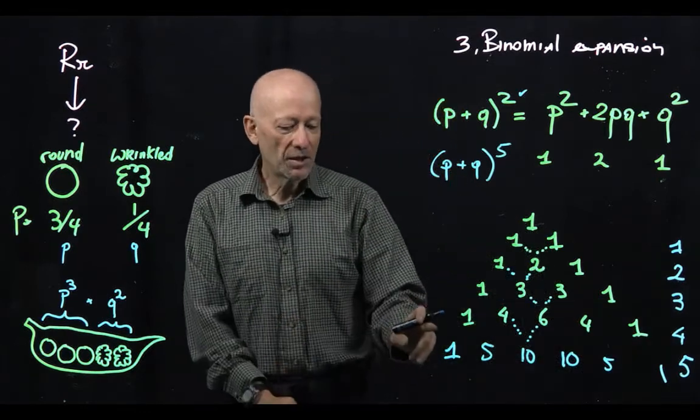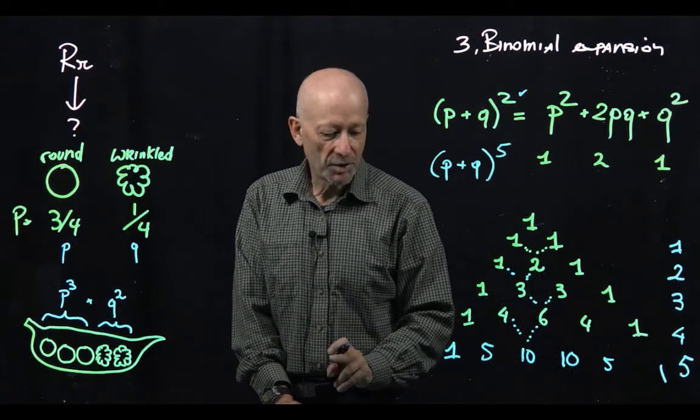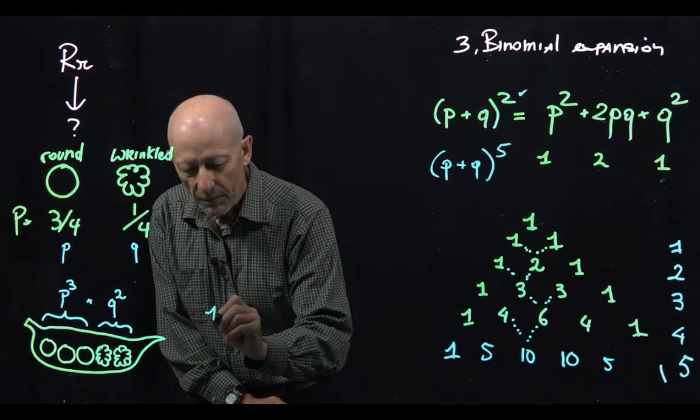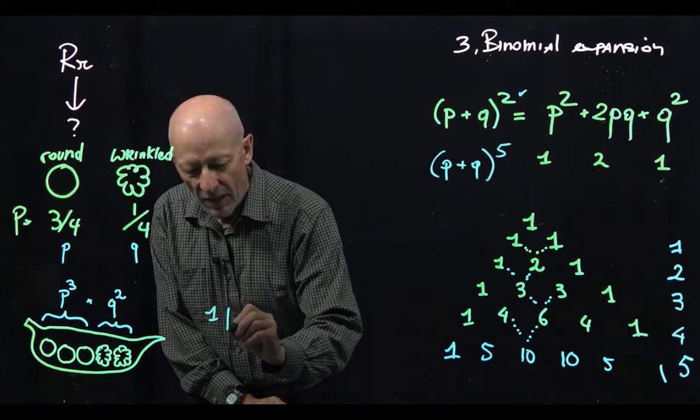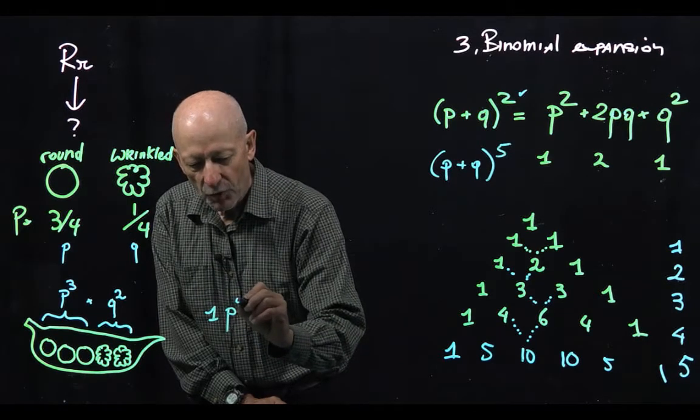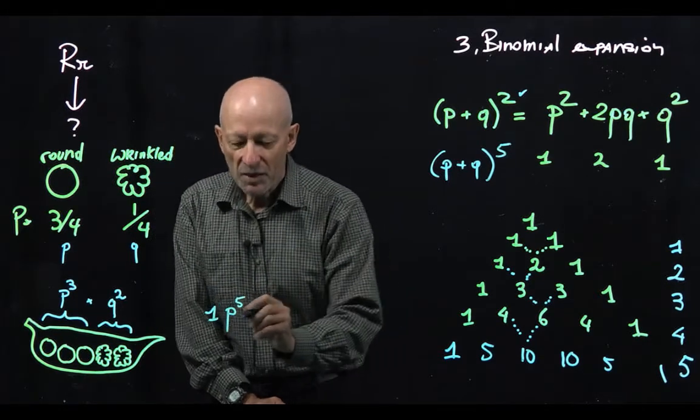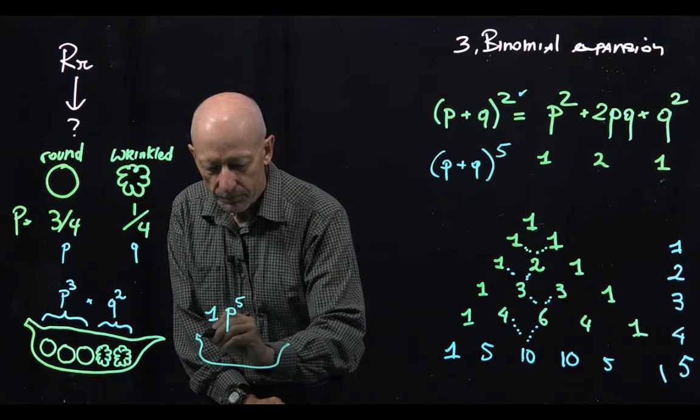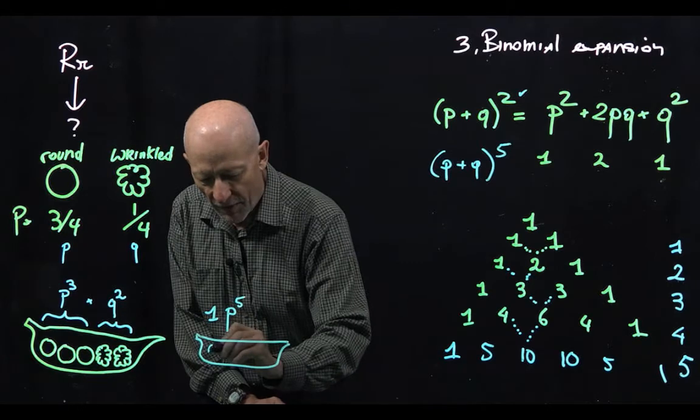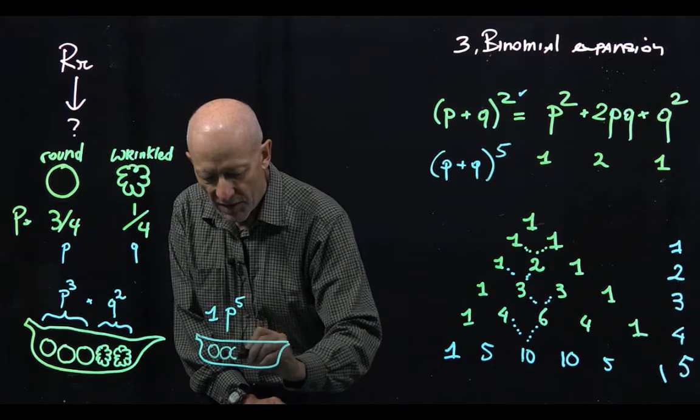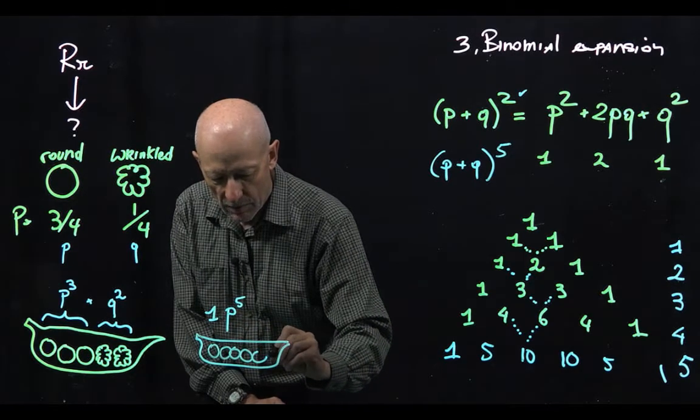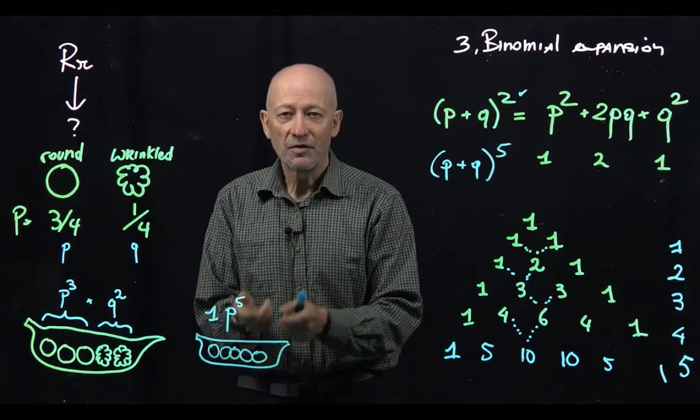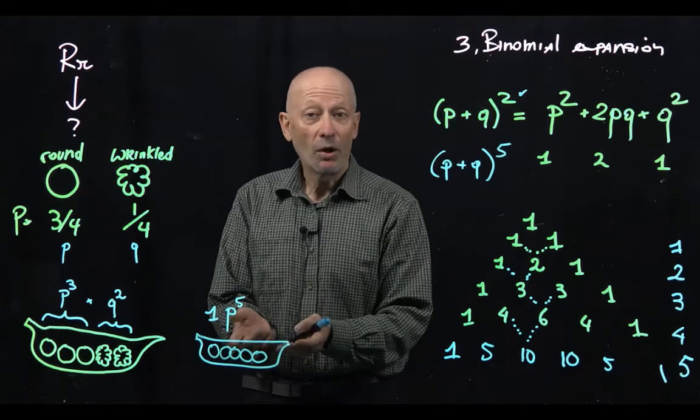So let's consider this first element of our expansion. It has a coefficient of 1 and that 1 would be multiplied times p to the fifth power. And this represents a pod that has 5 round seeds. This actually makes mathematical sense because there is only one way to make this type of pod.